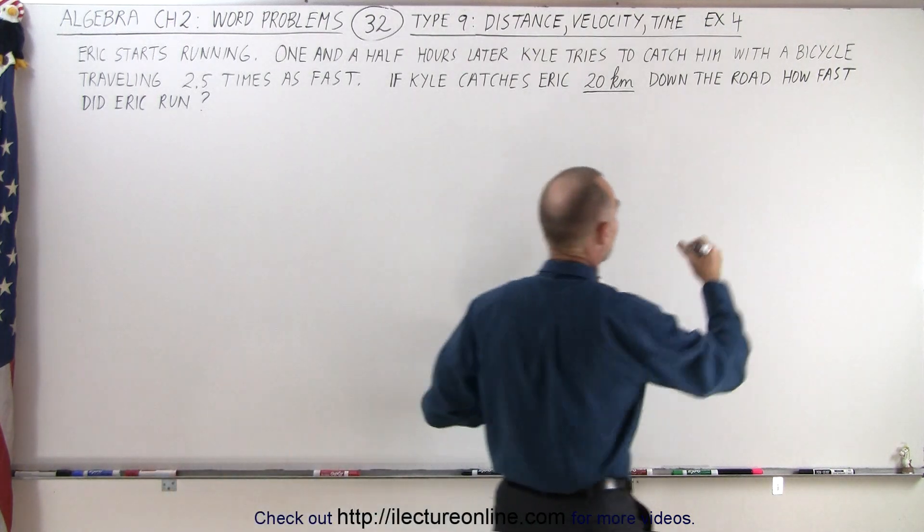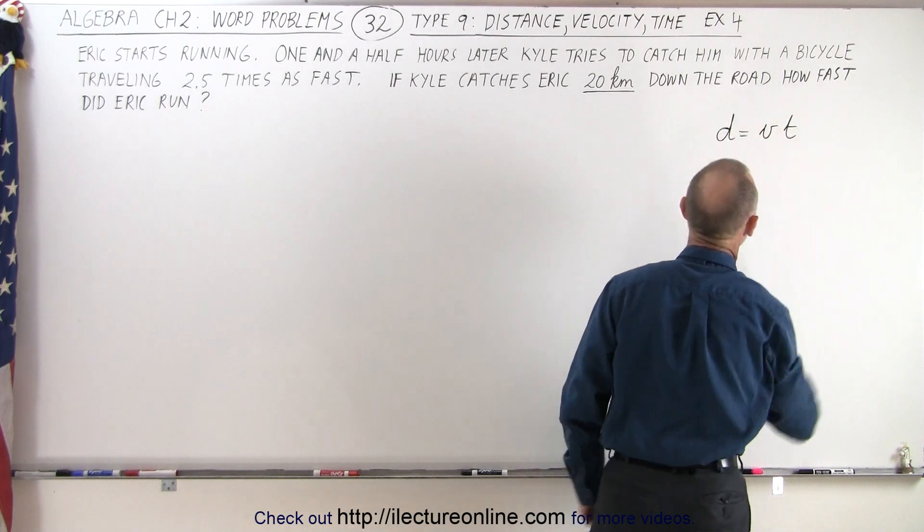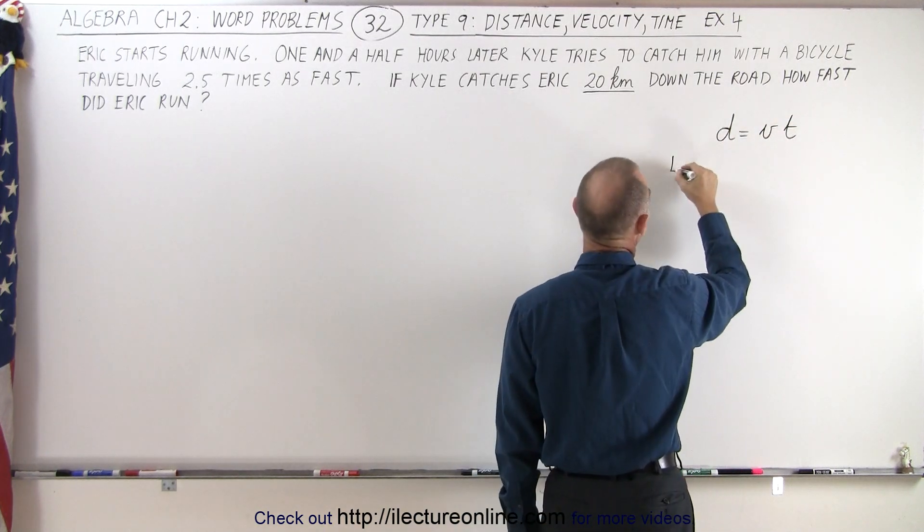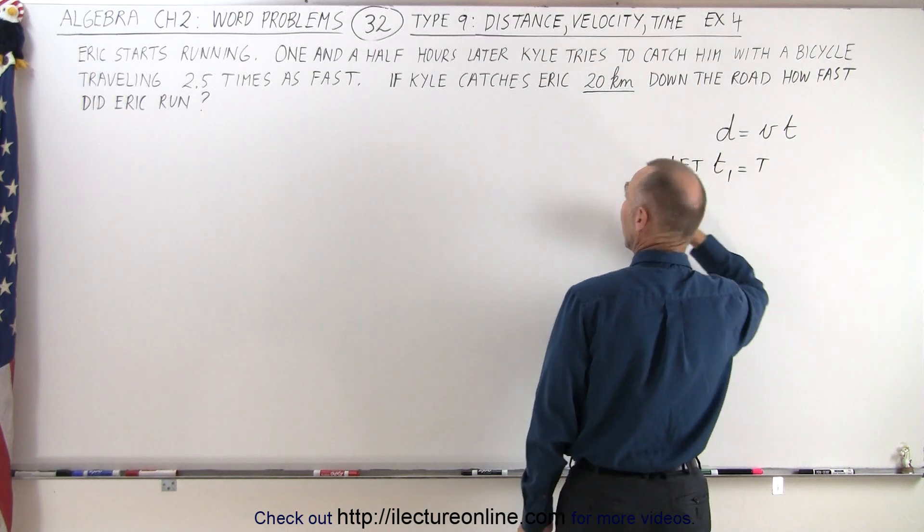So naturally we're going to start with the equation that distance equals velocity times time. If we let t1 equal time for Eric the runner,